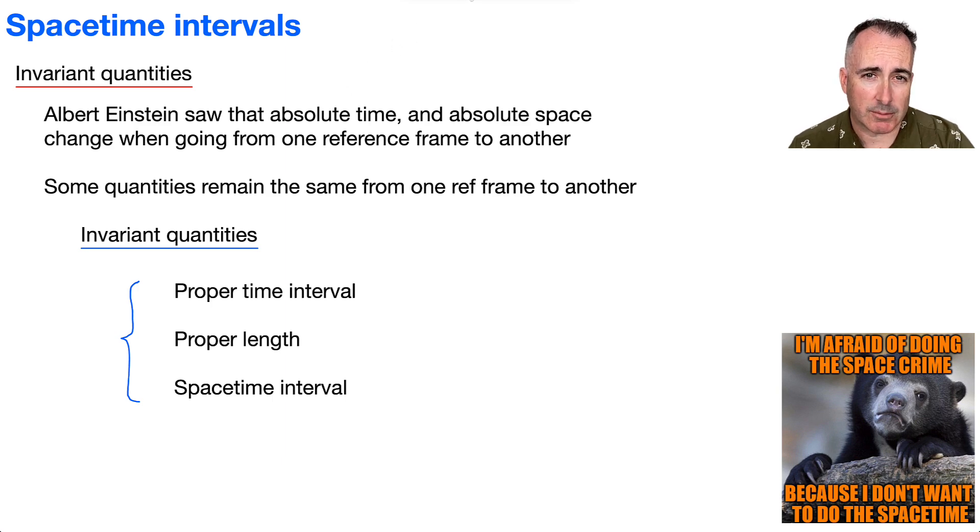So there's a few of them that we can talk about. First of all, we've got proper time interval, and hey, we've already learned about that, haven't we? That's delta T0, that's the proper time. And we've also got proper length. Hey, we've also learned about that, that's L0. And now we have a new one. It's called the spacetime interval, and it's delta S. So this right here is the new one, and that's the one we're going to be investigating a little bit further.